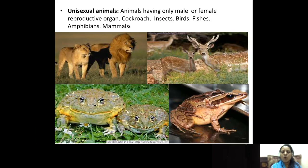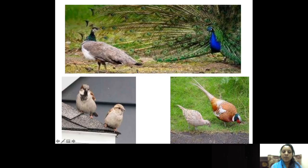We call this condition hermaphrodite or bisexual animal. Best examples are tapeworm, earthworm, sponges, and leech. Next come unisexual animals, which we commonly see — cockroaches, insects, birds, fishes, amphibians, mammals. Both male and female will be distinct, with totally different morphological structures, and the male and female reproductive parts are present in two different individual structures. For example, the peahen and the peacock show the unisexual condition of animals.